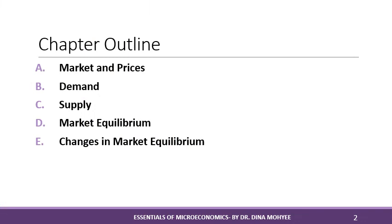Chapter 3 is organized as follows. First, it begins with defining markets and prices. Second, it analyzes the demand side of the market. Analysis is then turned to the supply side. After that, it explains market equilibrium. And finally, what causes this market equilibrium to change? In this lecture, we are going to cover the first two points, which are markets and prices and demand.